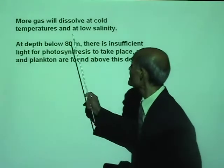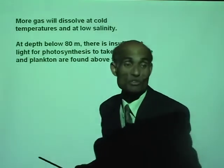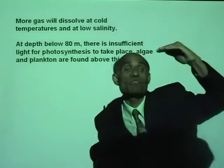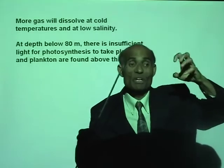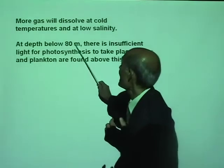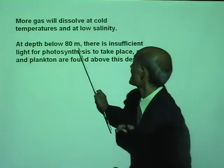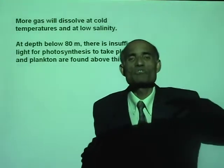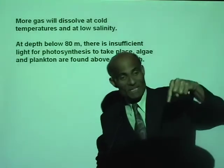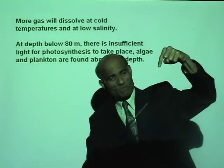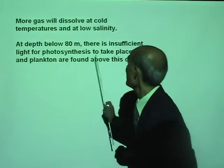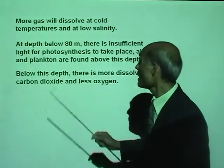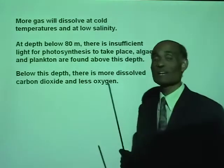At a depth of about 80 meters, there is insufficient light for photosynthesis to take place, so algae and plankton are found only above that depth. They need sunlight to survive, and below 80 meters, there is no sunlight and photosynthesis cannot happen. Below this depth, there is more dissolved carbon dioxide and less oxygen.